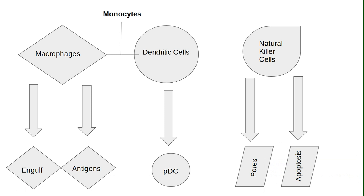Natural killer cells are cytotoxic and hold large granule lymphocytes, making them toxically potent to the target cell. The natural killer cell makes contact with the target cell and can create a pore in the membrane leading to its lysis. Other molecules can also insert themselves into the target cell and create apoptosis — programmed cell death — occurring through fragmentation of the target cell's DNA.